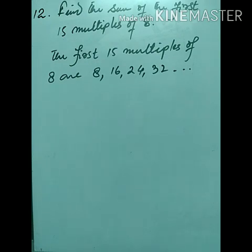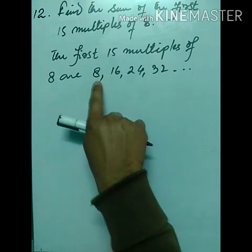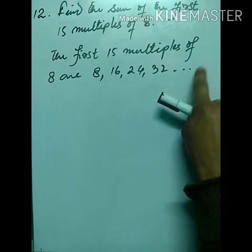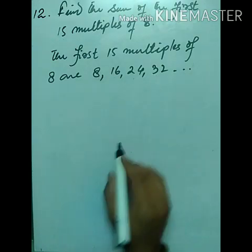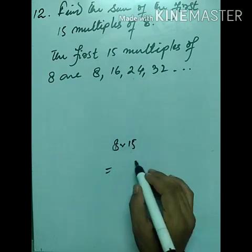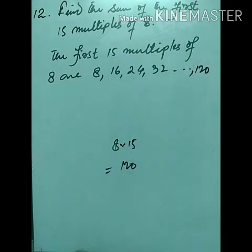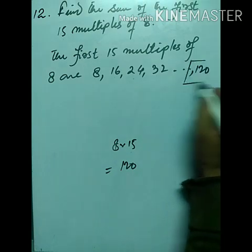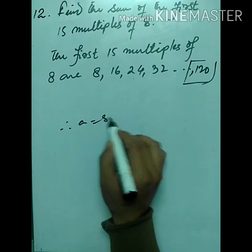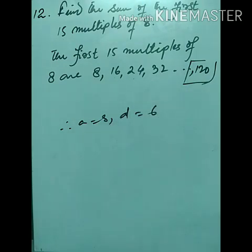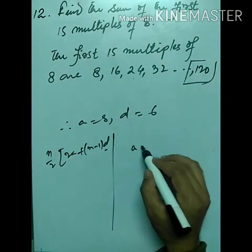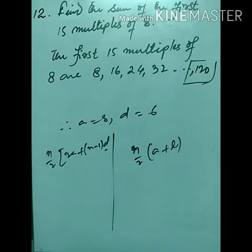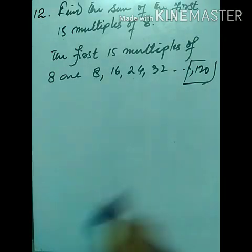This question can be solved in two ways. Since we need the first 15 multiples, the 15th multiple is 8×15 = 120, which can be used as the last term. Alternatively, use first term a = 8 and common difference d = 8 with the formula Sₙ = n/2 × [2a + (n−1)d].